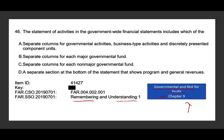The statement of activities in the governmental wide financial statements includes which of the following? It includes a separate column for governmental activities — yes, it does. Business-type activities — yes, it does. And discretely presented component units if they are available — yes. So the government-wide financial statement has governmental activities column, business activity column, and discretely presented component units.